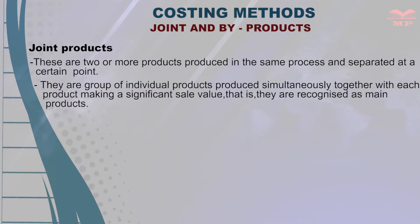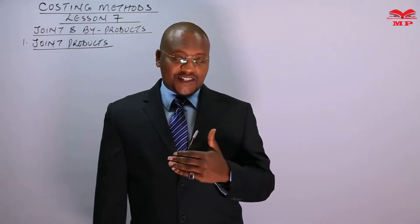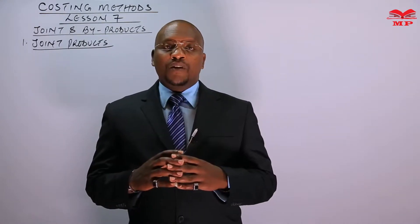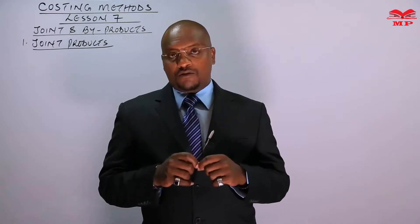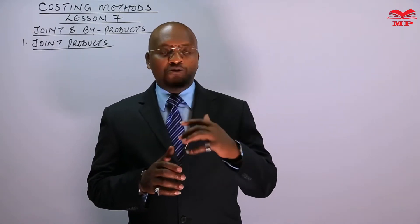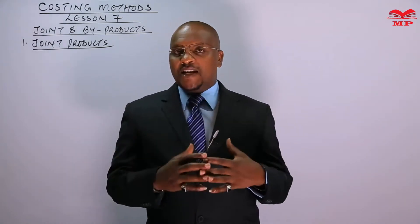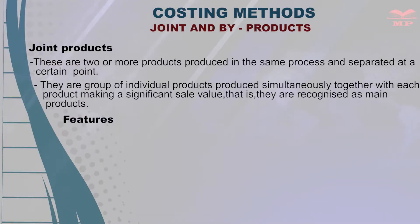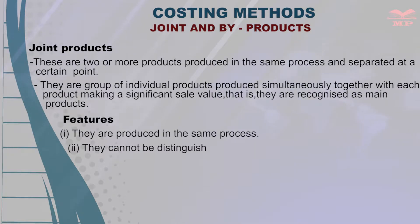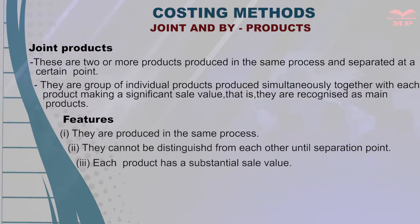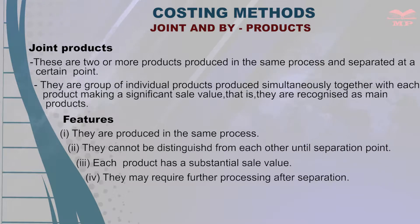They are identified as individual products at a certain stage of completion. They are a group of products produced in the same process, produced together, but at a particular stage of completion they are separated, and you can have different sale values for different individual products. The features include: one, they are produced in the same process; two, they cannot be distinguished from each other until the separation point; three, each product has a substantial sale value; and four, they may require further processing after separation.